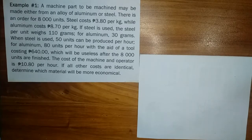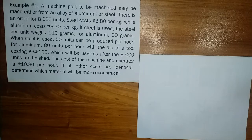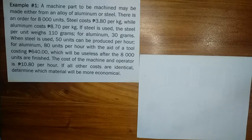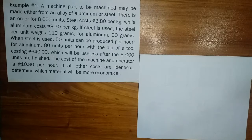For number one, a machine part to be machined may be made either from an alloy of aluminum or steel. There is an order for 8,000 units. Steel costs 3 pesos and 80 centavos per kilogram while aluminum costs 8 pesos and 70 centavos per kilogram. If steel is used, the steel per unit weighs 110 grams. For aluminum, 30 grams.